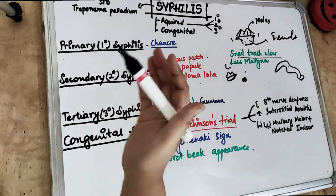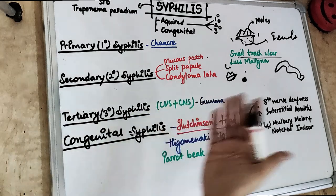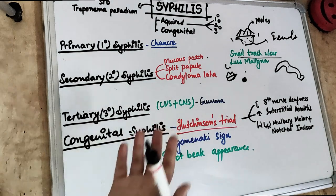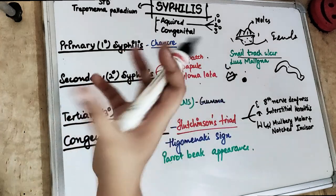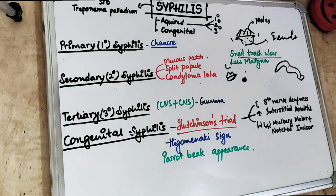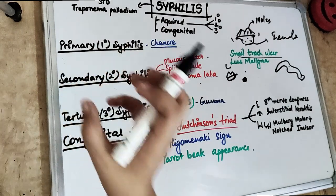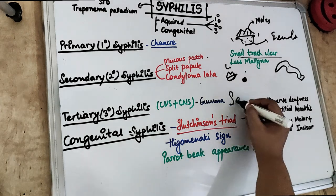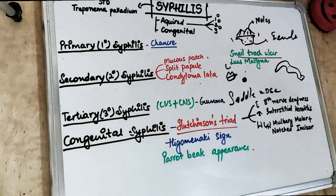Next comes tertiary syphilis, where the disease has reached another level involving the CNS as well as the CVS. We see gummas, which are swellings present on the palate and tongue — swollen masses that can sometimes be ulcerated. Also in tertiary syphilis, the patient presents with saddle nose.